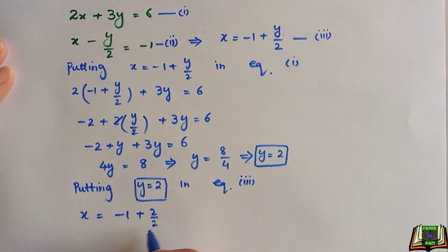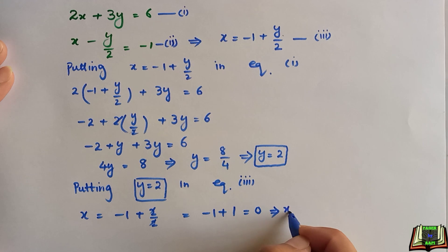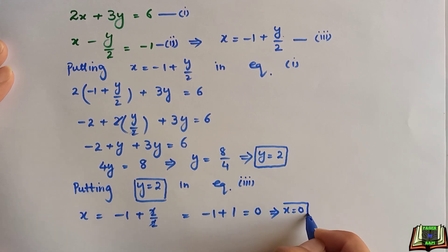So 2 divided by 2, that is equal to -1. This and this will be cancelled out. We are left with 1. So -1 + 1 = 0. So x = 0.